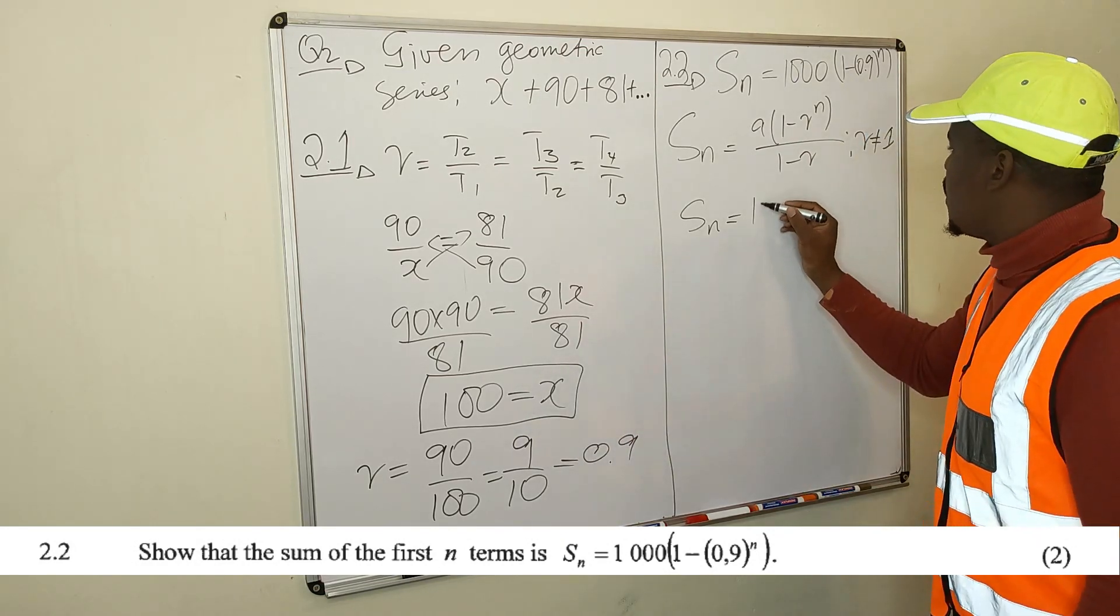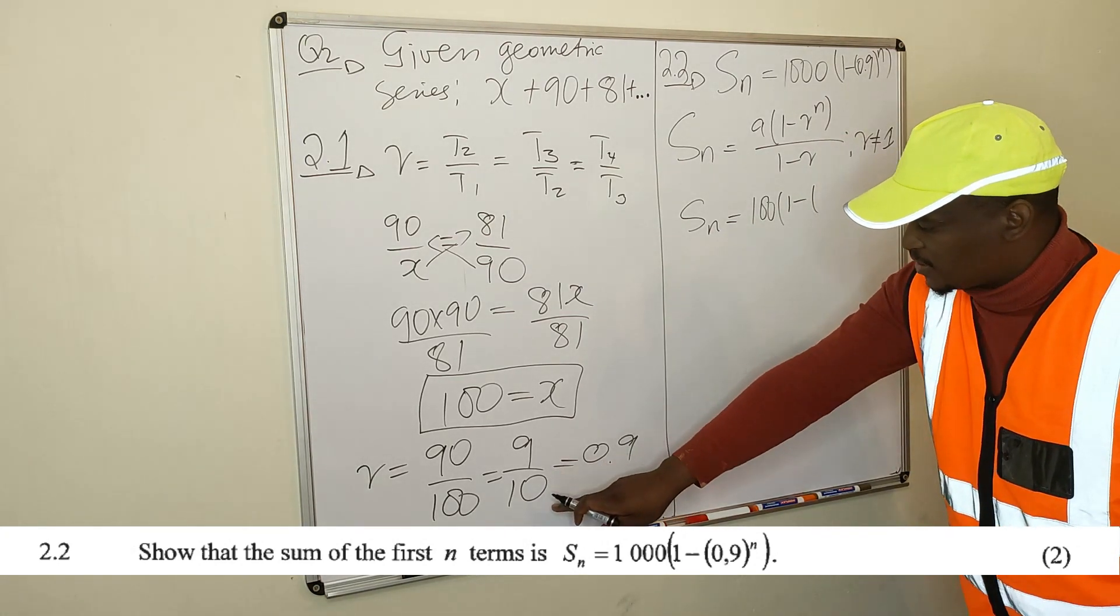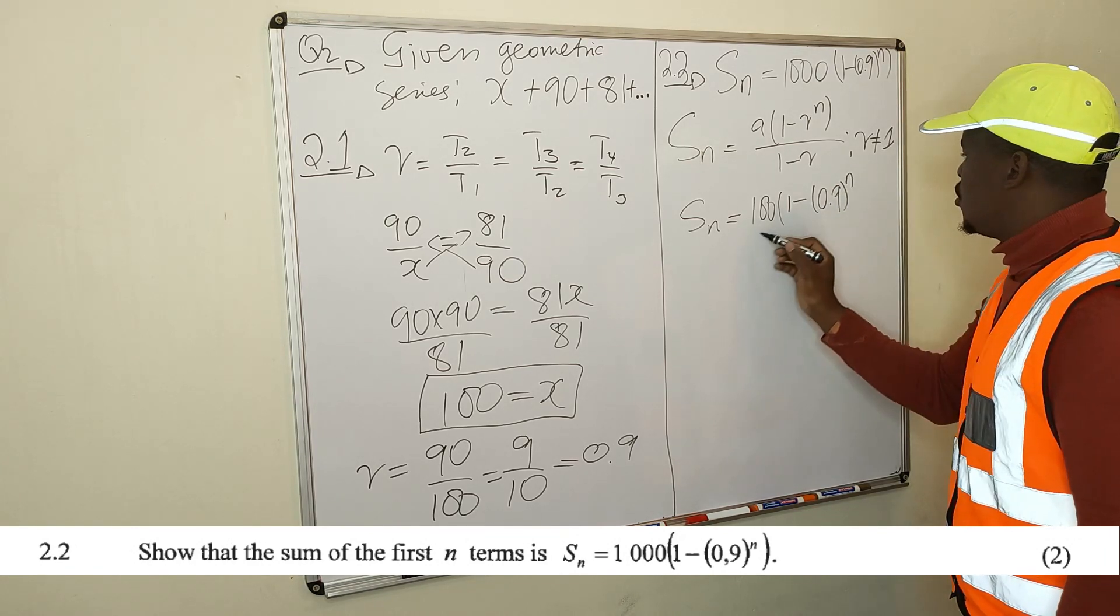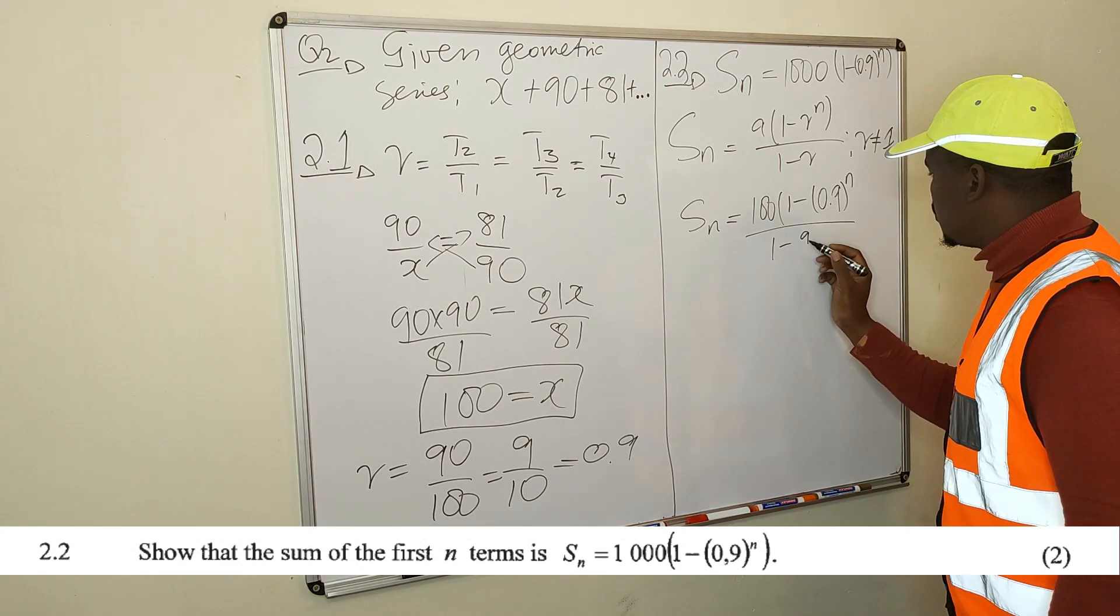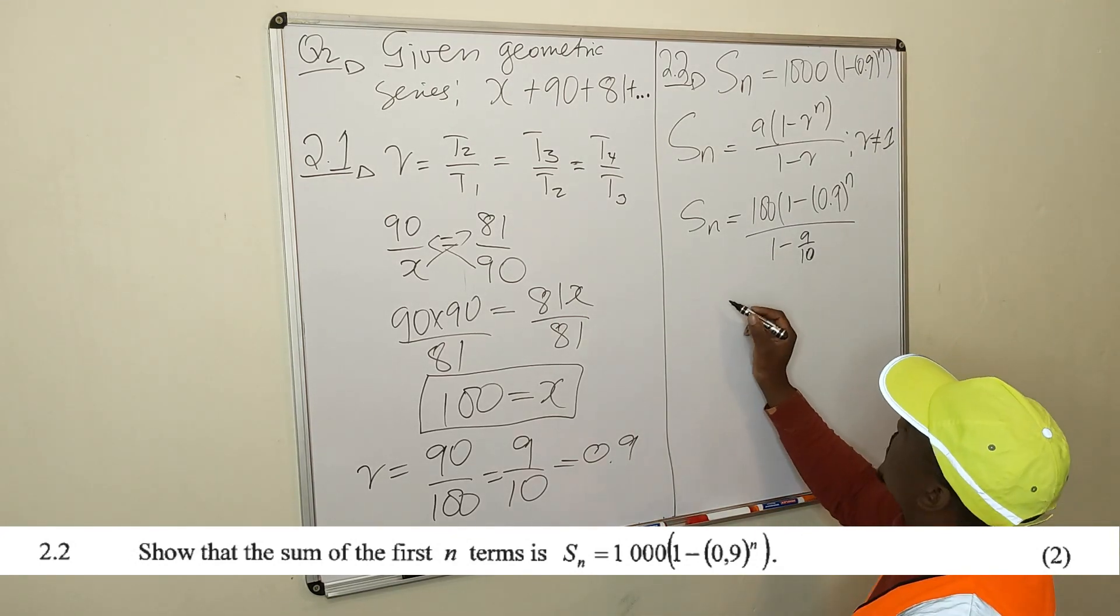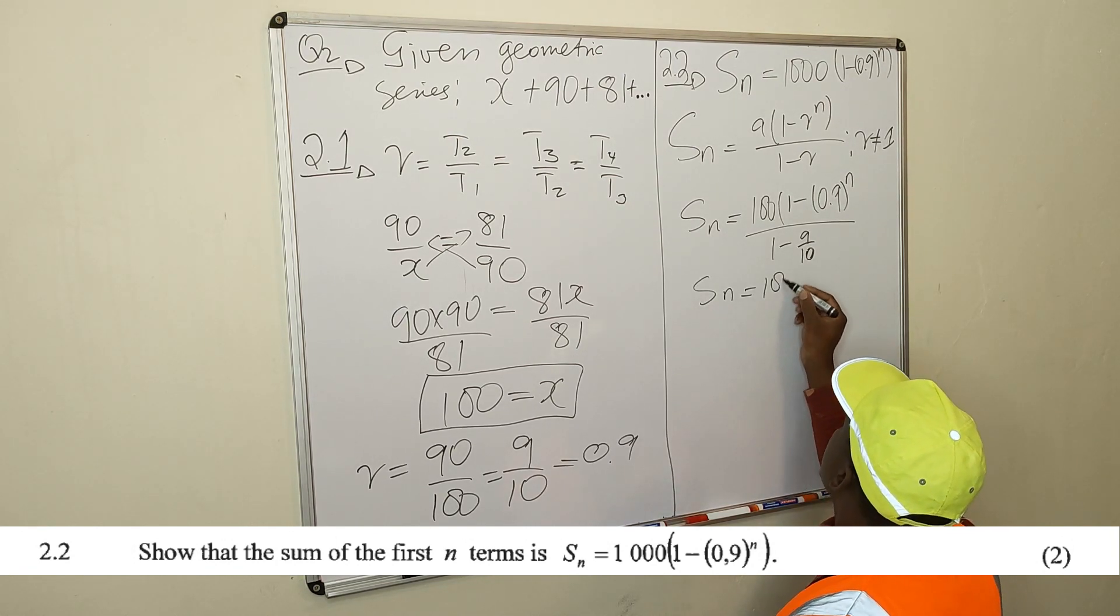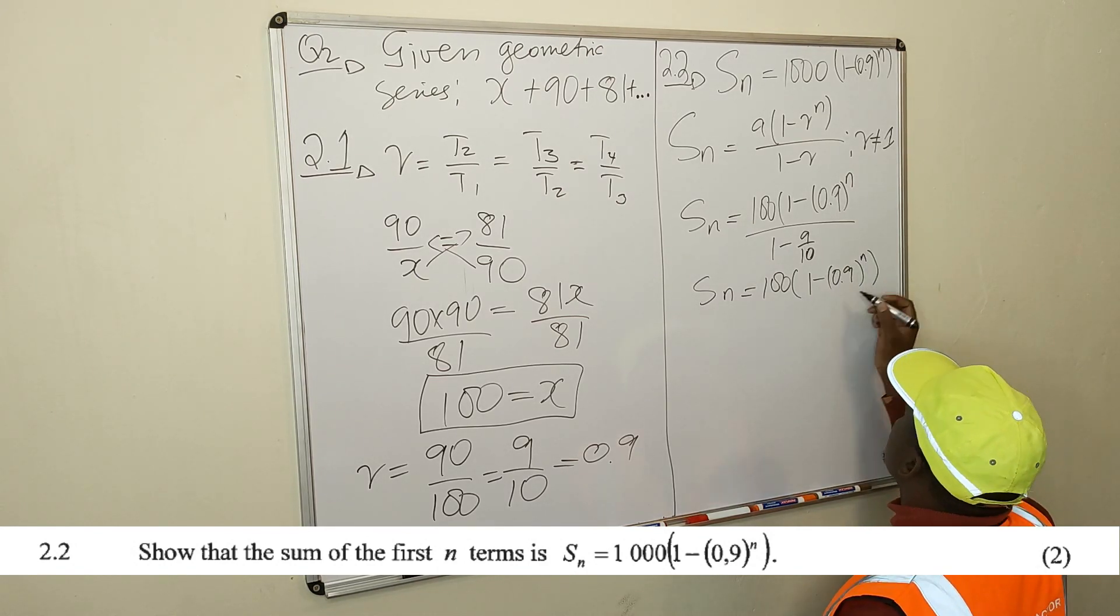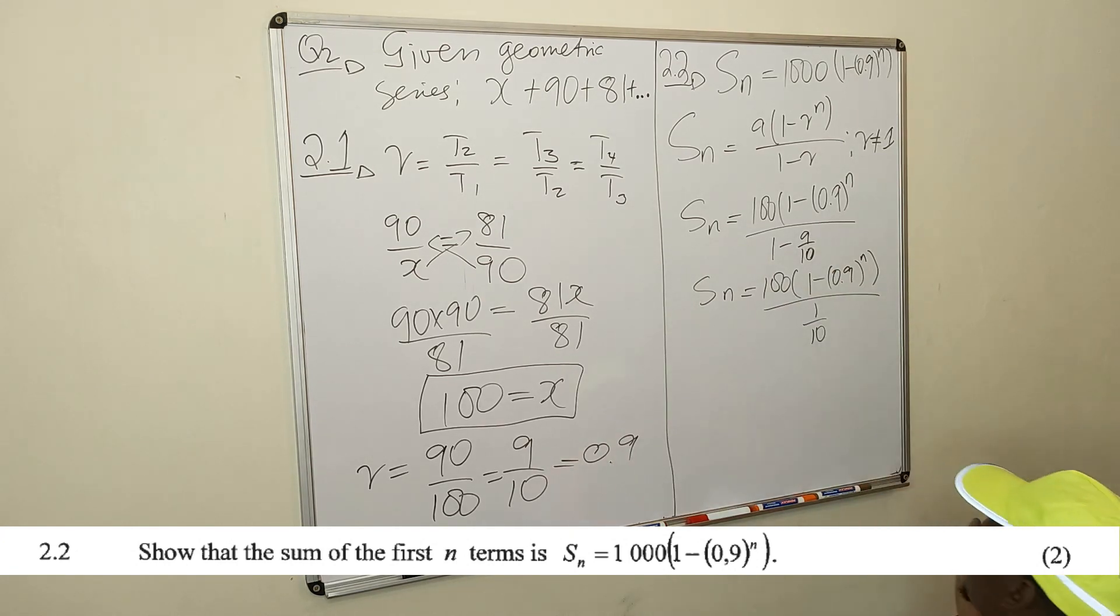To 1 minus R. What is your R? Your R is 9 over 10 or 0.9, raise n, all divided by 1 minus 9 over 10 or 0.1. It's up to you. Simplify this. You find that you have S_n is equal to 100 times 1 minus 0.9 raise n over this, 1 minus this, that's 1 over 10.